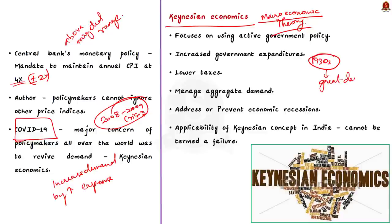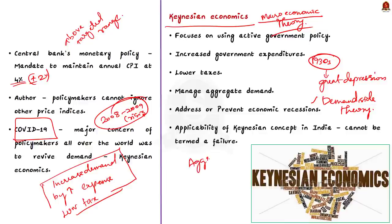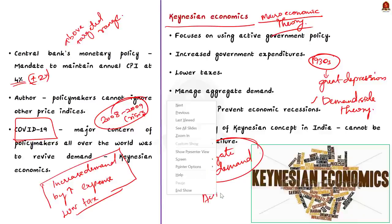Now, particularly, this Keynesian economics is considered a demand-side theory that focuses on changes in the economy over the short run. So, based on this theory, Keynes advocated for increased government expenditures and lower taxes to stimulate demand and also to pull the global economy out of depression. It refers to the concept that optimal economic performance could be achieved and economic slumps can be prevented by influencing aggregate demand. And this could be done through activist stabilization and economic intervention policies by the government. That is, Keynesian economics focuses on using active government policy to manage aggregate demand in order to address or to prevent economic recessions.